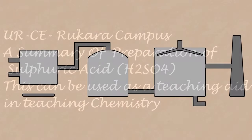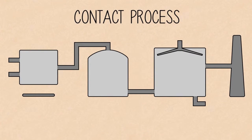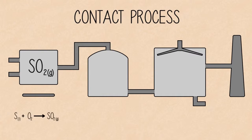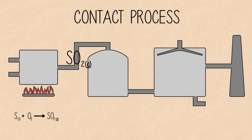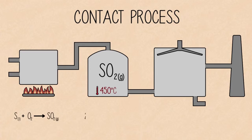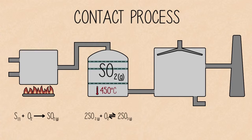In summary, the contact process converts sulphur to sulphur dioxide by combusting sulphur in air. The sulphur dioxide produced is heated to 450°C over a vanadium oxide catalyst.